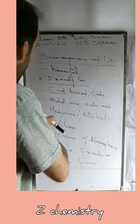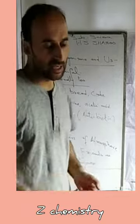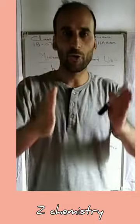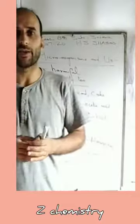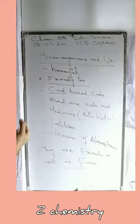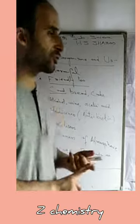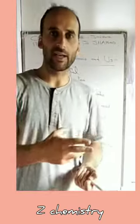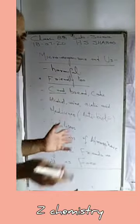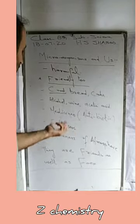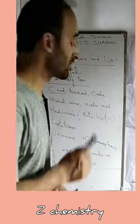Microorganisms can also be used for the manufacture of fertilizers. For example, Azotobacter bacteria can fix nitrogen in the soil, helping plants grow.